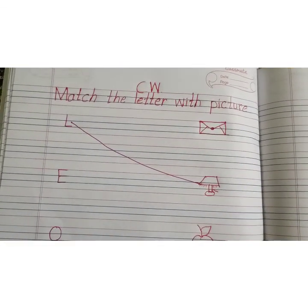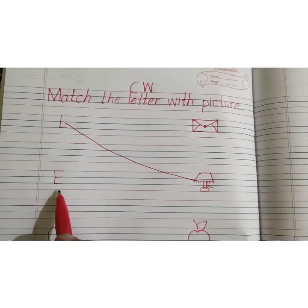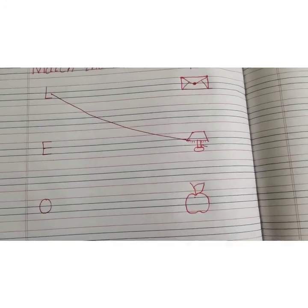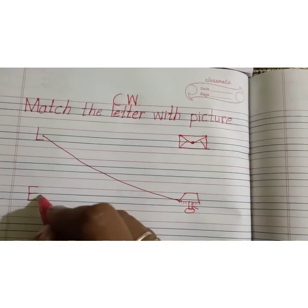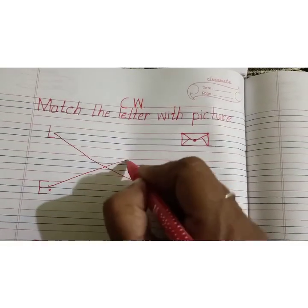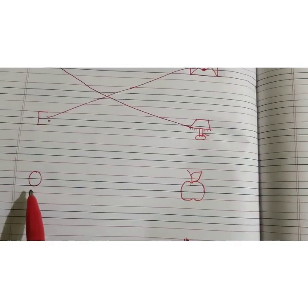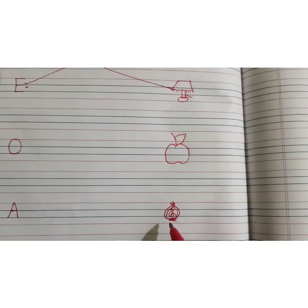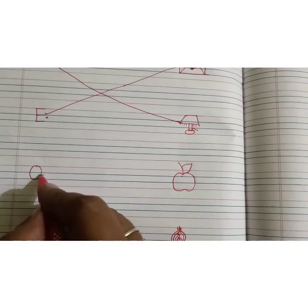Right. Which letter is this? E. E says the sound — Apple? No. Onion? No. Envelope. Yes! E — envelope. Match this. Now, which letter is this? O. O says onion. Onion. So match this with onion.